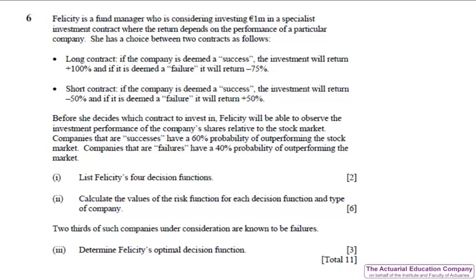Question 6 tests decision theory from chapter one and it's the fourth time that we've had an exam question on risk functions. The previous three questions were April 2010 question 9, April 2012 question 2 and September 2014 question 3. However the wording in this question is a little confusing. We can see that the decision we have to make is whether we choose a long contract or a short contract. Now the payoff as we can see depends on whether the company is a success or a failure so these must be the states of nature.